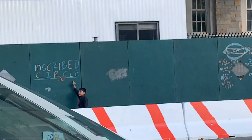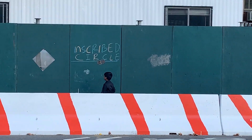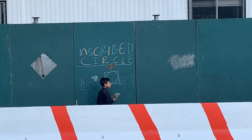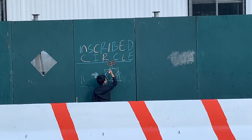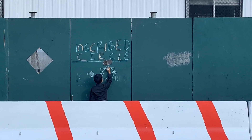Listen up, Bronx! Today I'm going to teach you about two squares with a total of five circles inscribed in them.